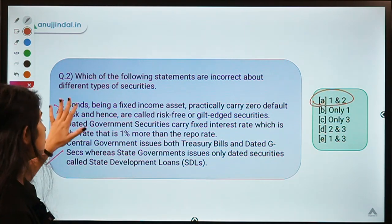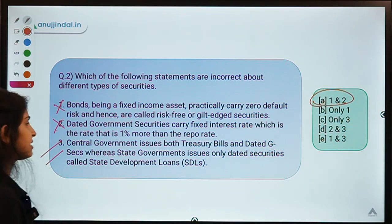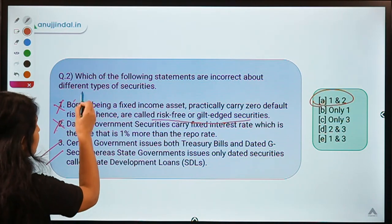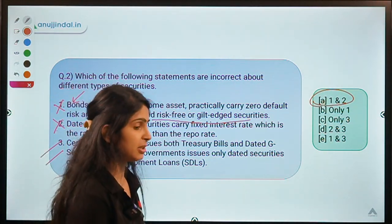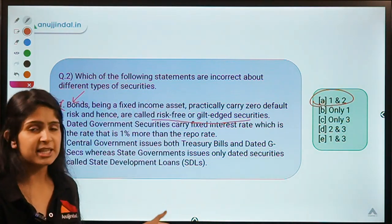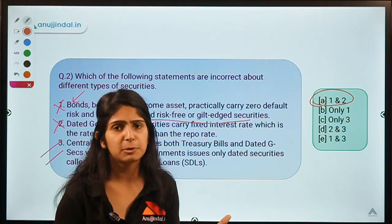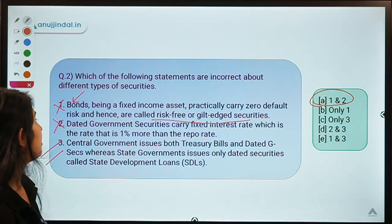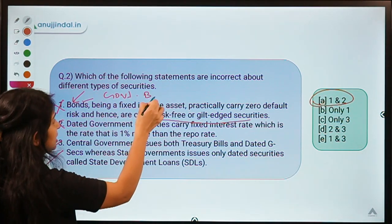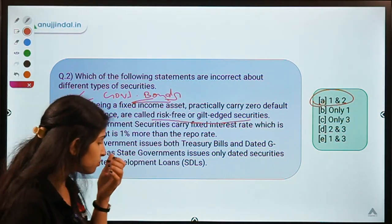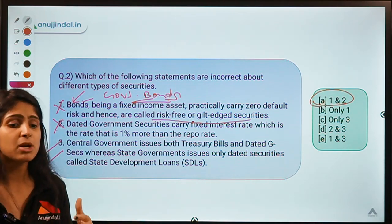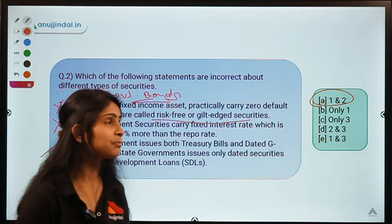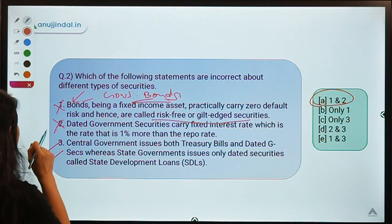Statement one says bonds being a fixed income asset practically carry zero default risk and are called risk-free or gilt-edged securities — this is incorrect because not every bond is risk-free. Only government bonds are considered risk-free; corporate bonds can carry default risk. Statement two says dated government securities carry a fixed interest rate that is 1% more than the repo rate — this is also incorrect, as dated government securities typically carry a floating interest rate linked to a benchmark parameter.